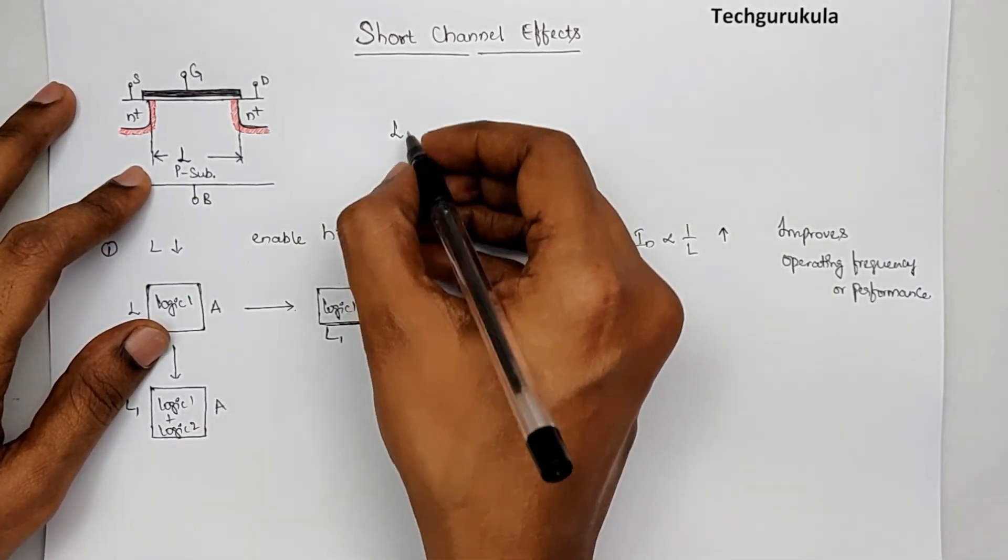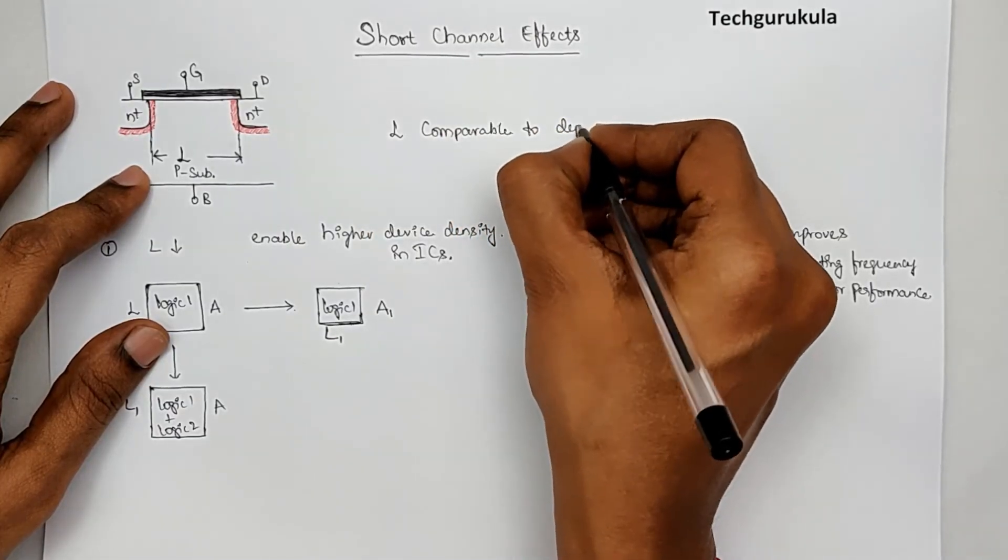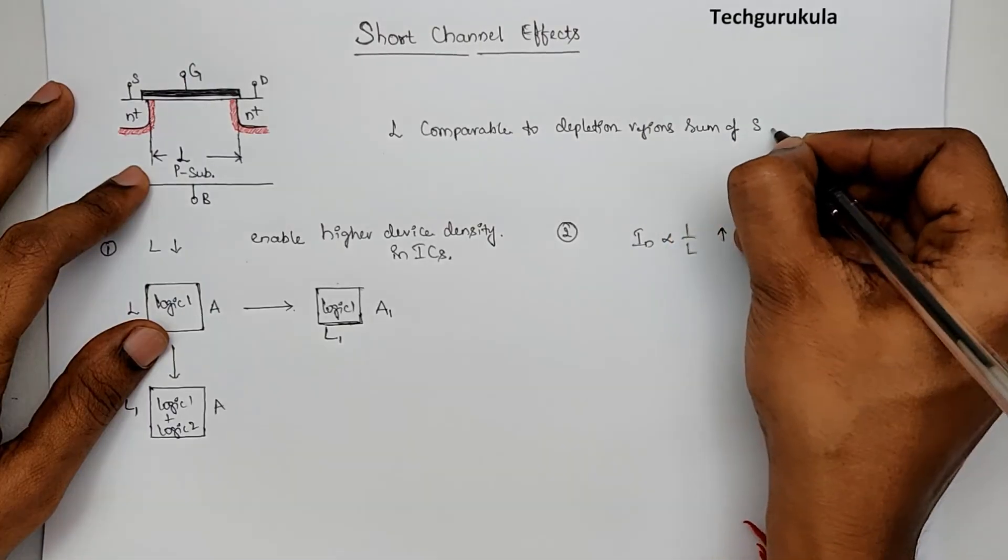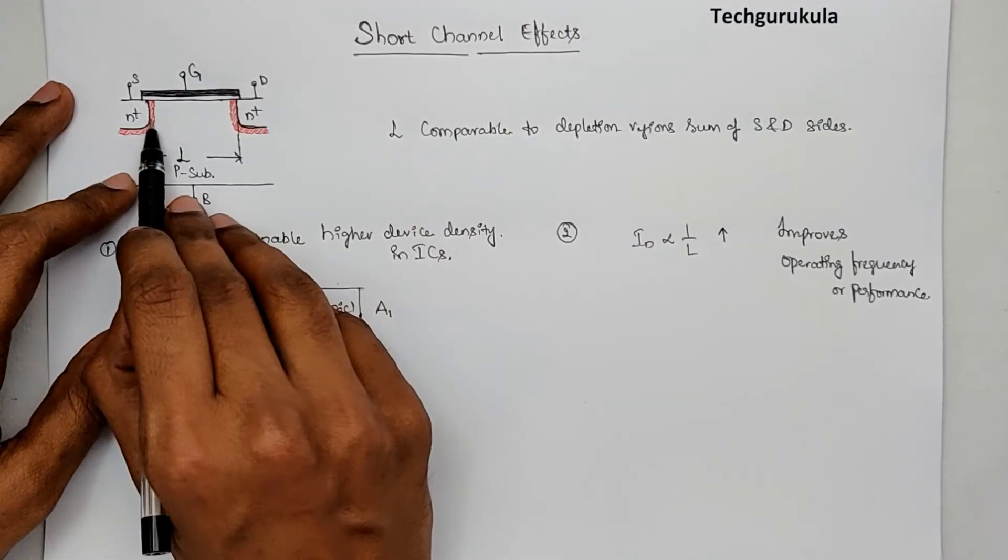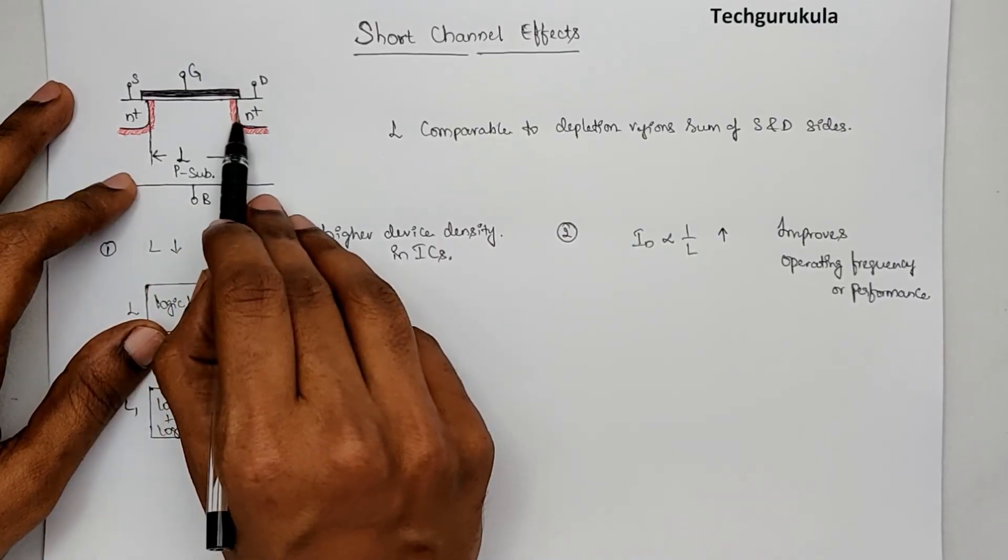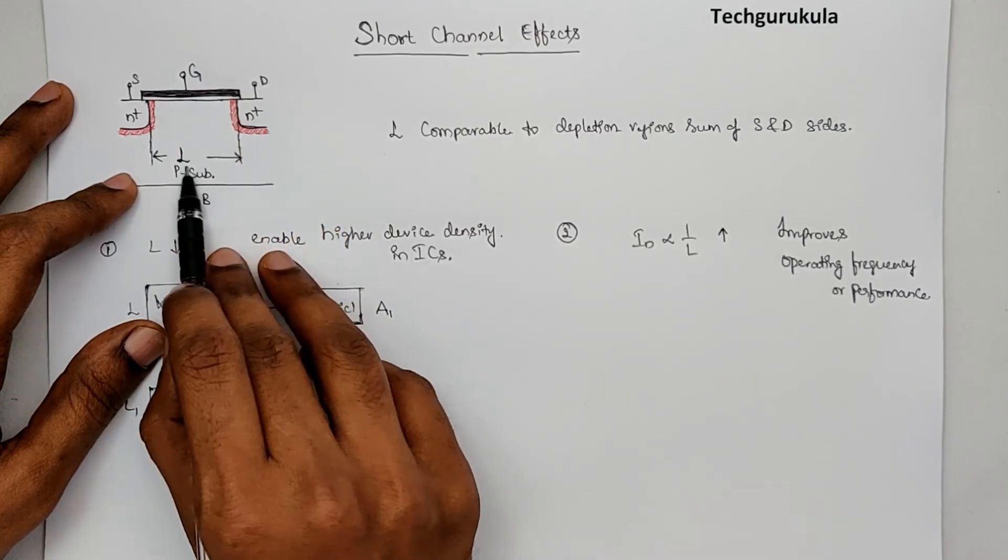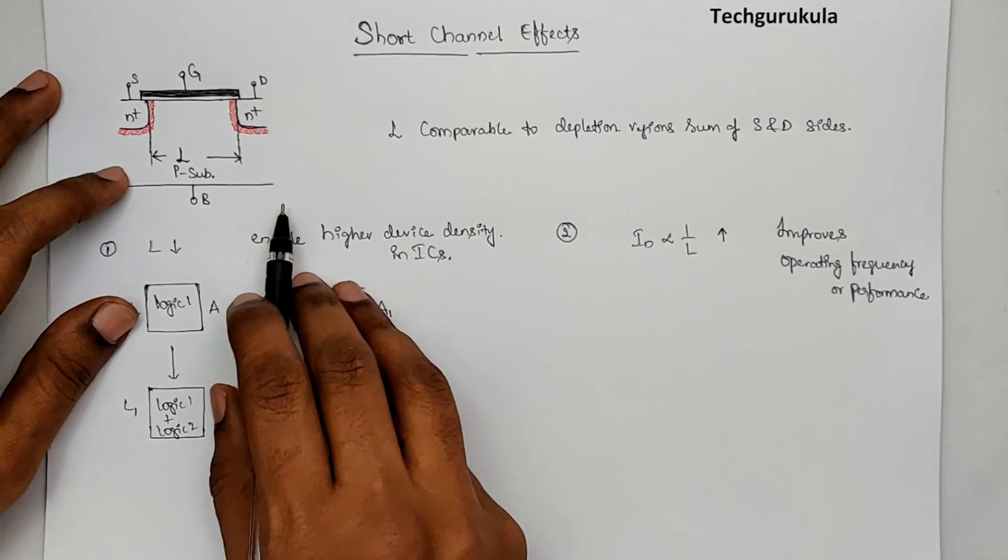The short channel is defined as when the length is comparable to the depletion regions sum of source and drain side, which means the depletion region on source side and the depletion region on the drain side. The sum of these two is comparable to the channel length, then we would call the channel length is short.